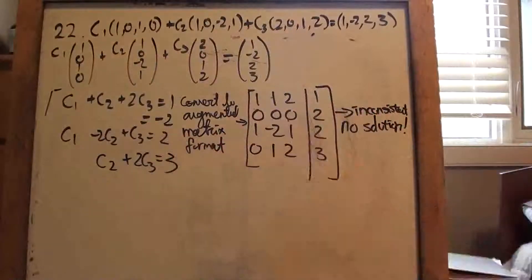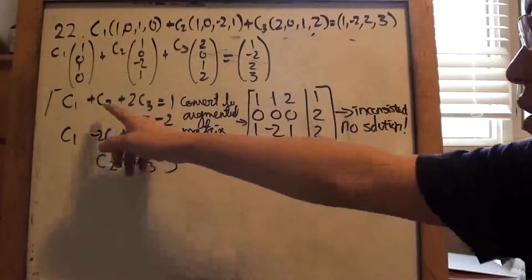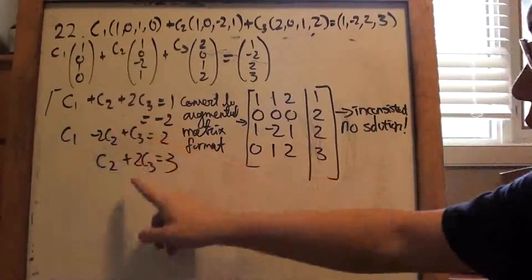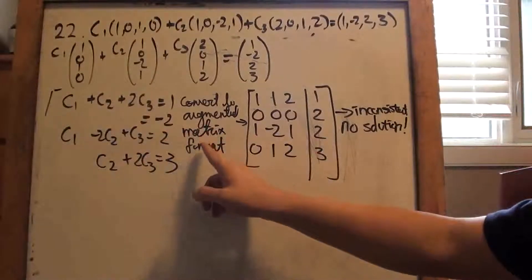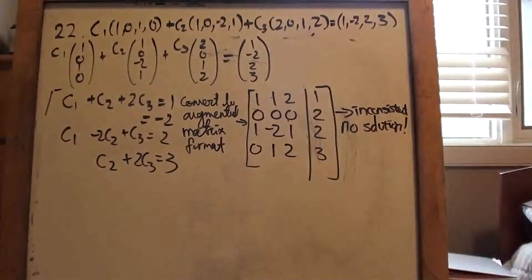But, no, can't do that. So, I have that, put it into linear equation format, and then convert it into augmented matrix format. So, this, second row, inconsistent, no solution. Done.